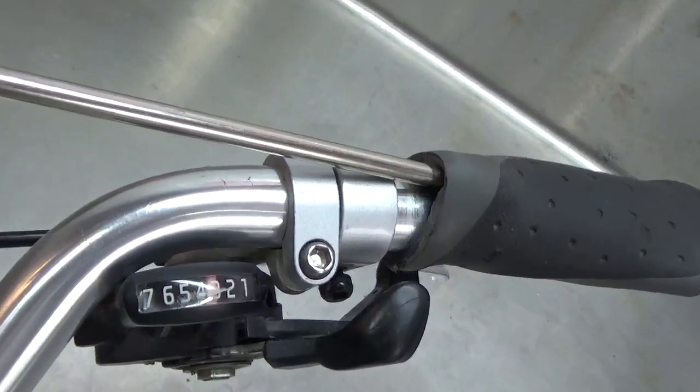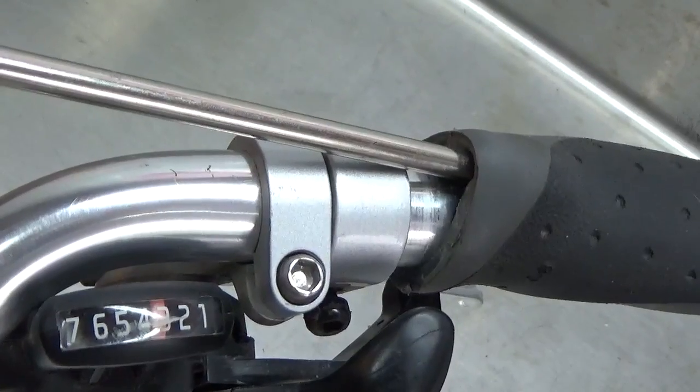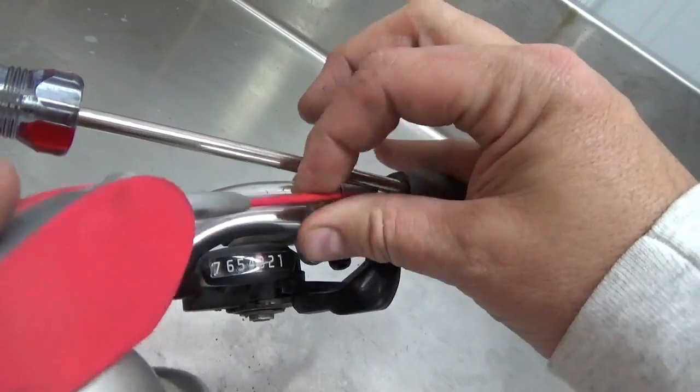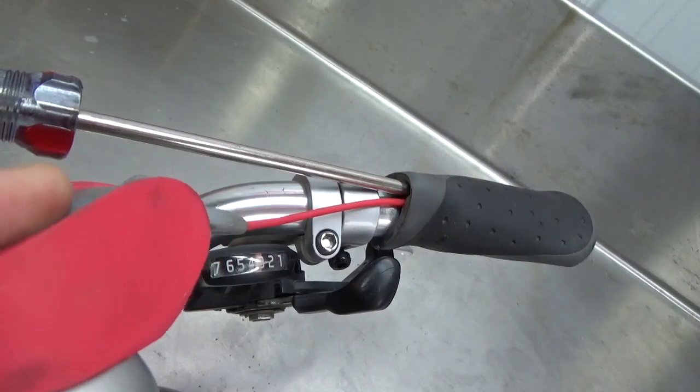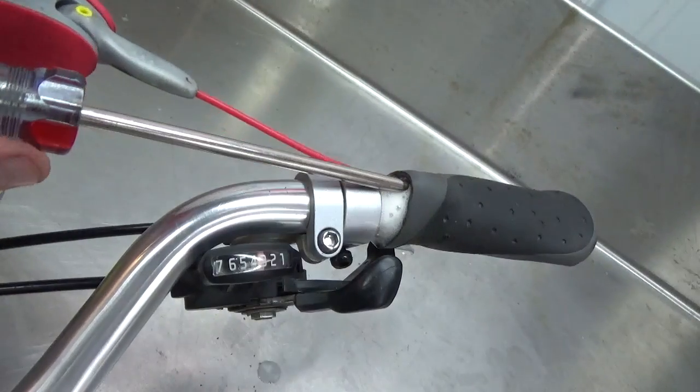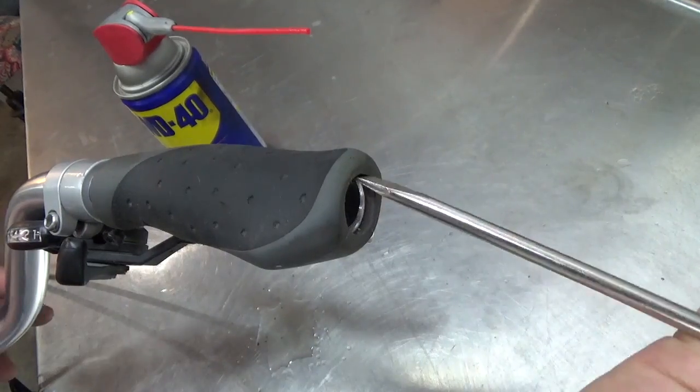This opens up a tunnel along the shaft of the screwdriver. Insert the spray nozzle all the way into the tunnel and spray some of the lubricant. Repeat this process on the other end of the grip if needed.